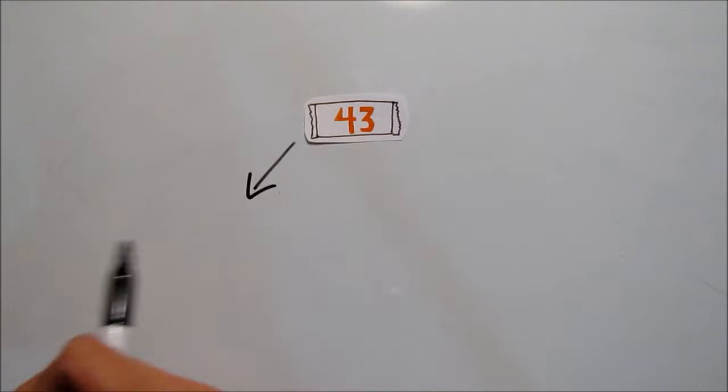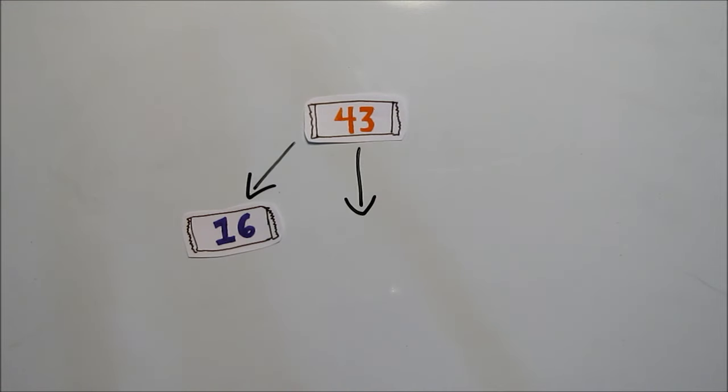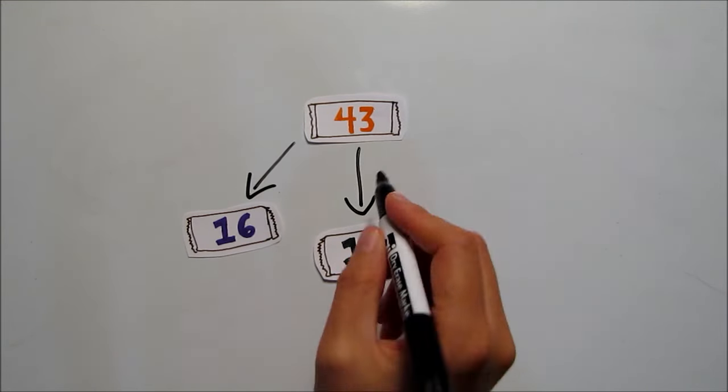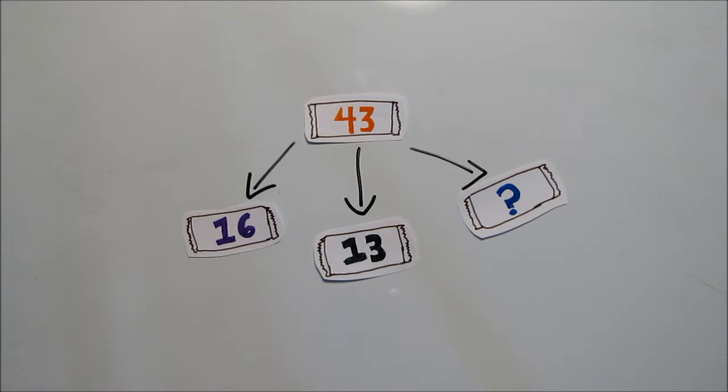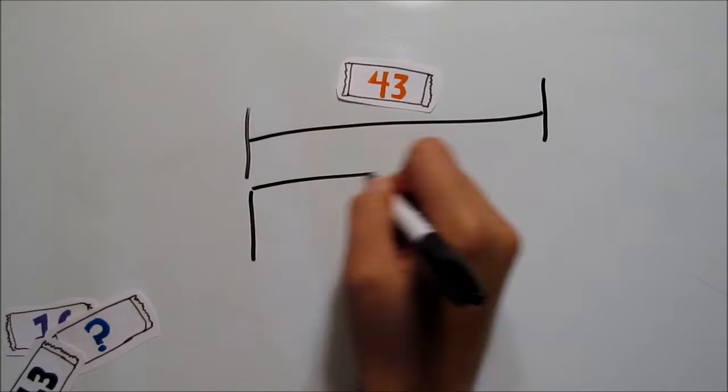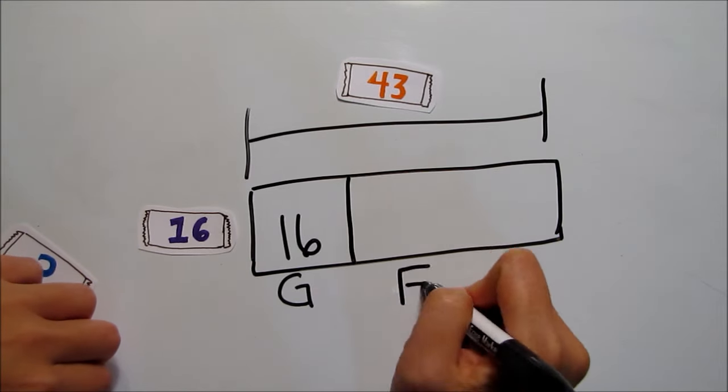We can also use a strip diagram when a part is missing. If there were 43 candy bars and 16 went to George and 13 went to Fred, we can find out how many candy bars Ron got. Every boy's candy bars are part of the 43, so we put them on our parts strip. We're going to do some subtracting to find the missing part,